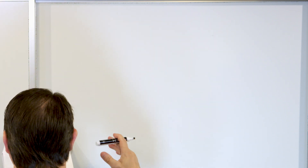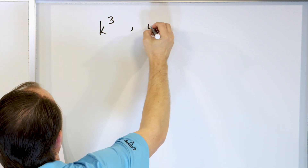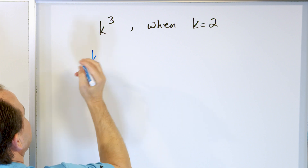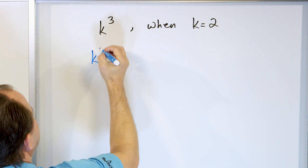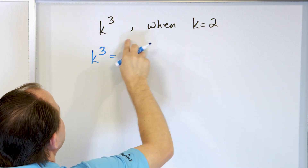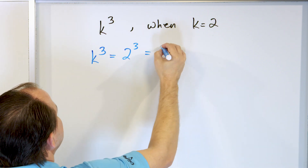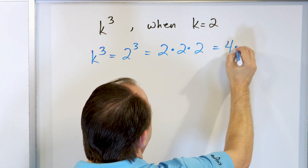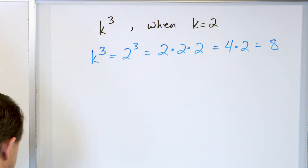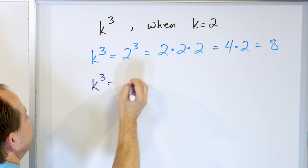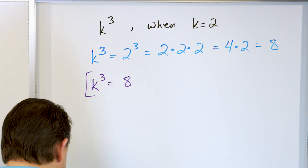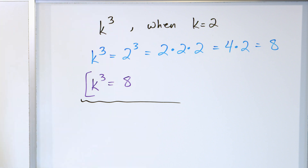We are past the halfway point. K to the power of 3 when K is equal to 2. We start with the expression — we call it an expression when we have these letters and calculations involving letters. K to the third power is equal to what? When K is 2, it goes in there: 2 to the power of 3. That's 2 times 2 times 2. Let's calculate in order: 2 times 2 is 4, and we still have that last times 2, so that's equal to 8. K to the power of 3 is equal to 8, when K equals 2. You stick that 2 in there, then it's 2 times 2 times 2, which equals 8.